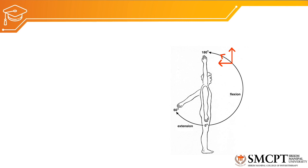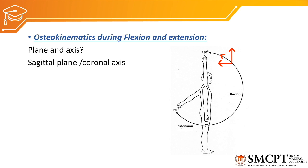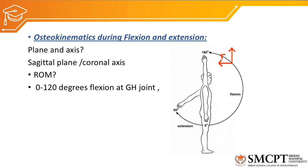Flexion and extension occur in the sagittal plane and coronal axis. The range of motion of flexion is 0 to 180 degrees and extension is 0 to 60 or 65 degrees. However, 0 to 120 degrees of flexion is available at the glenohumeral joint, and the total of 180 degrees is achieved with scapular movement.